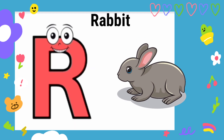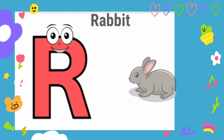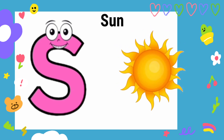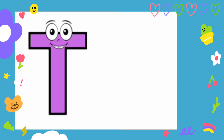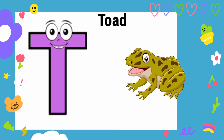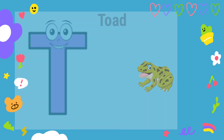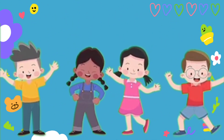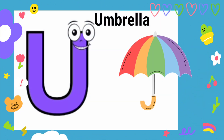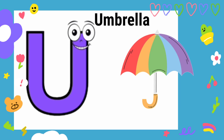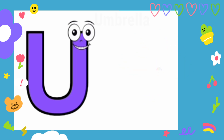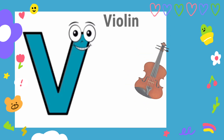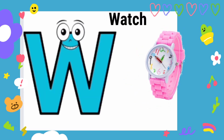R is for Rabbit, R-R-Rabbit. S is for Sun, S-S-Sun. T is for Toad, T-T-Toad. U is for Umbrella, U-U-Umbrella. V is for Violin, V-V-Violin.